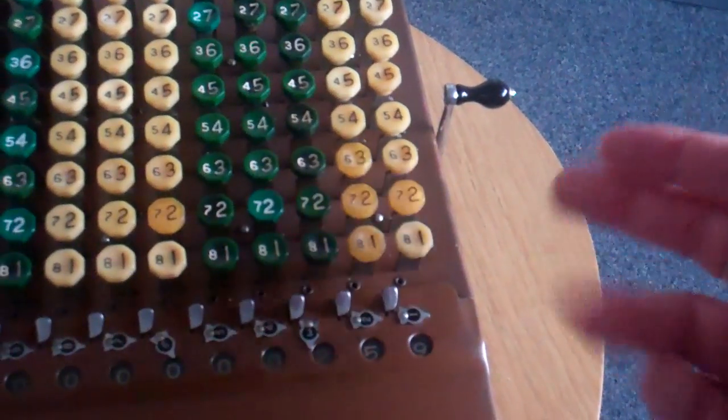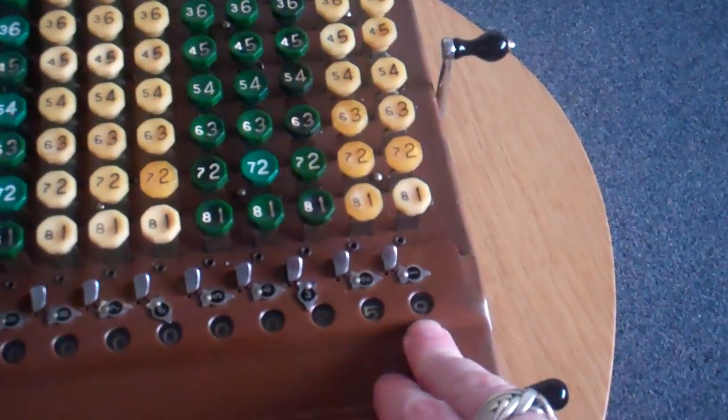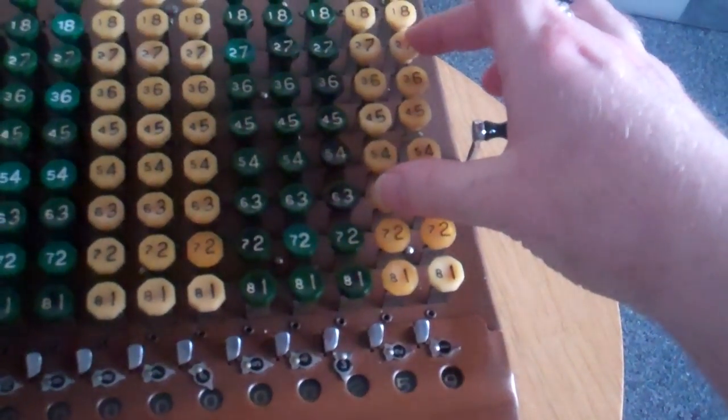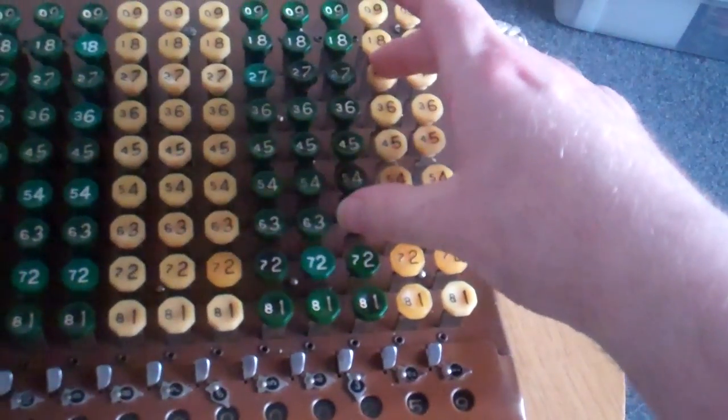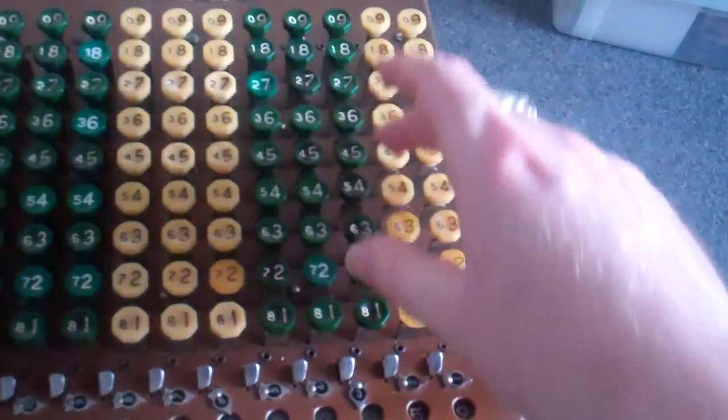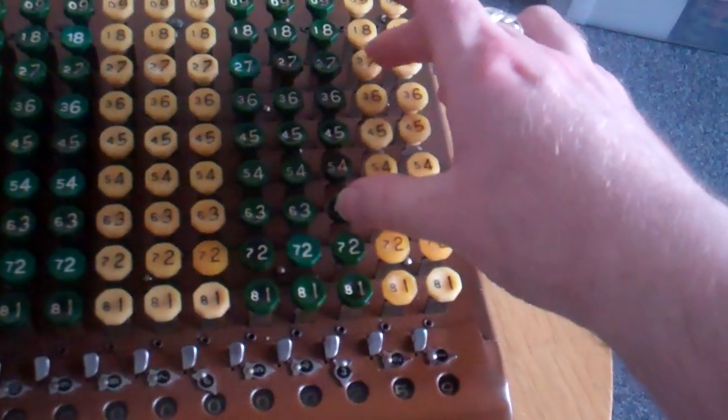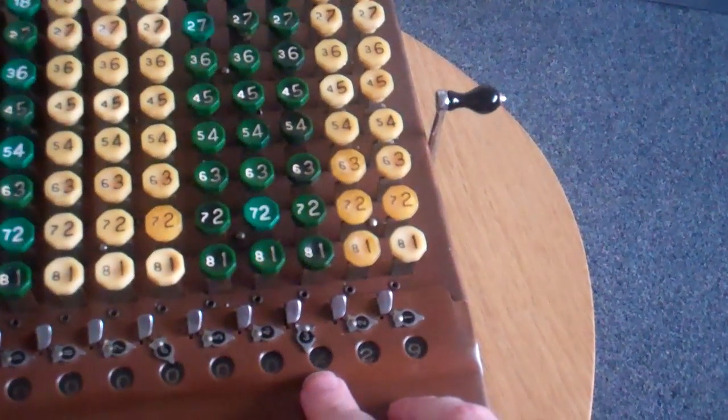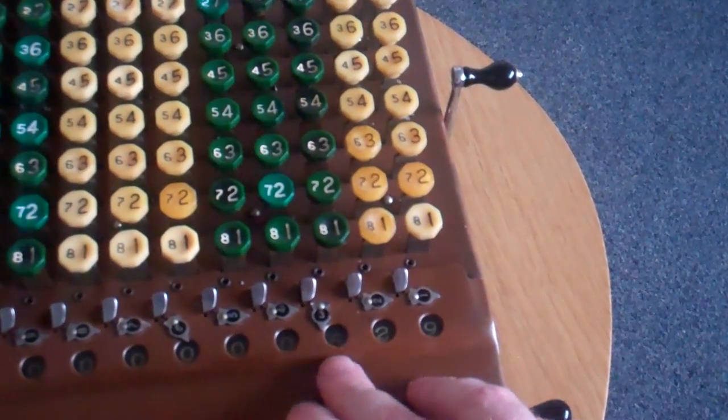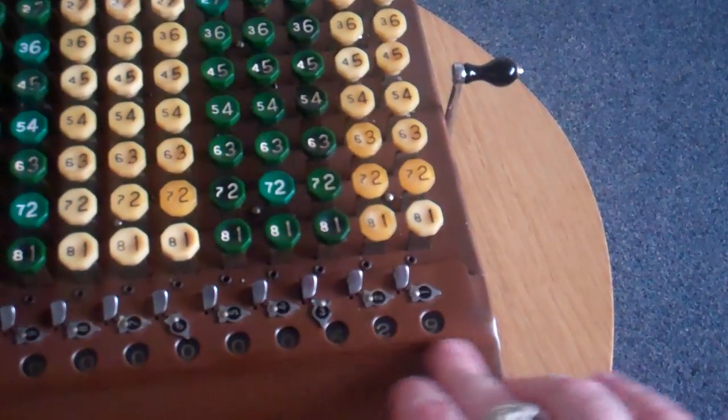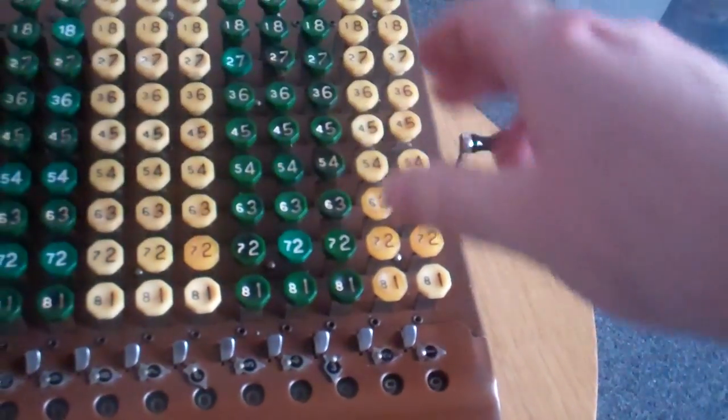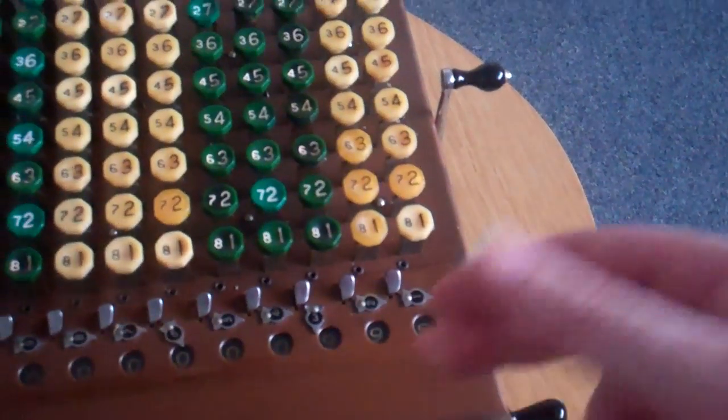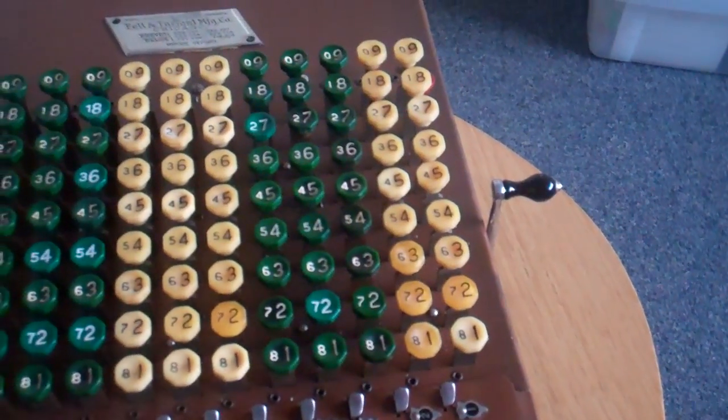So seven times 37 is 259. To do 17 times 37, you just move one up so that you now add it one digit further. So you're essentially adding it 10 times in one go. So this is now 17 times 37, 629. 27 times 37, 999. So you can see multiplication is fairly easy.